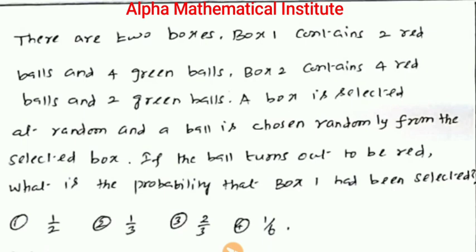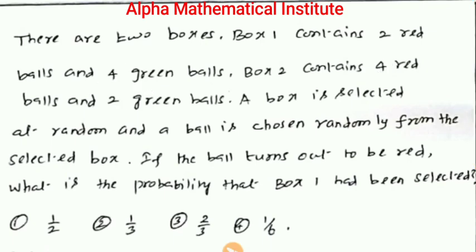First, we will understand the question clearly. There are two boxes — box 1 and box 2. Box 1 has two red balls and four green balls. Box 2 has four red balls and two green balls.